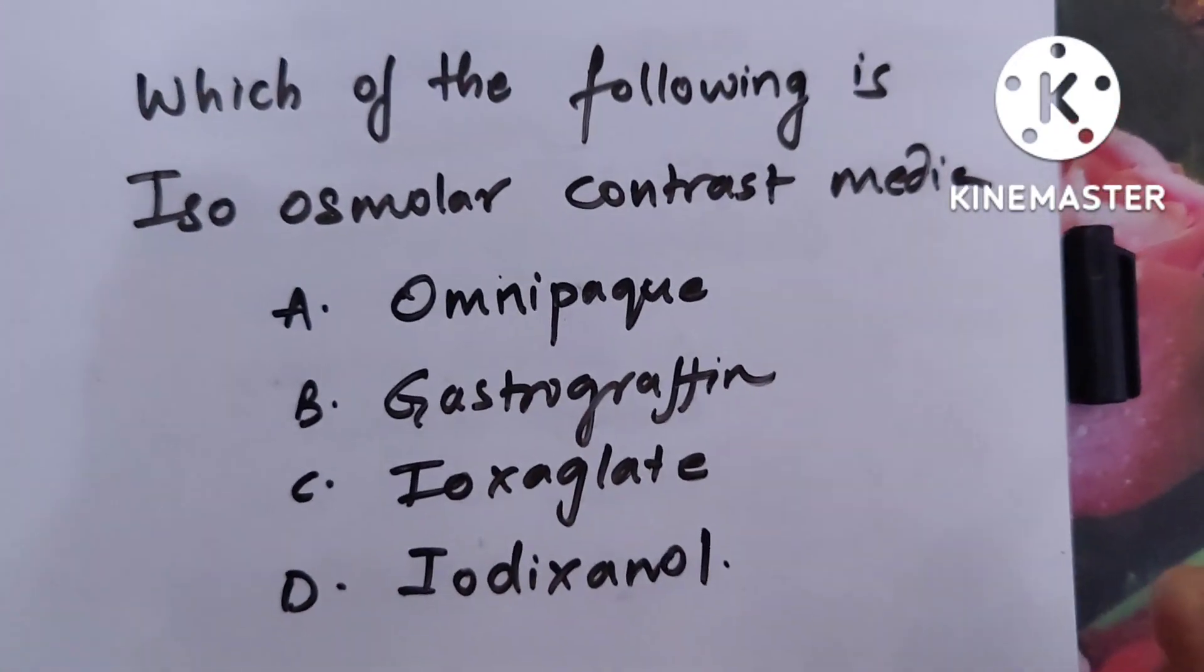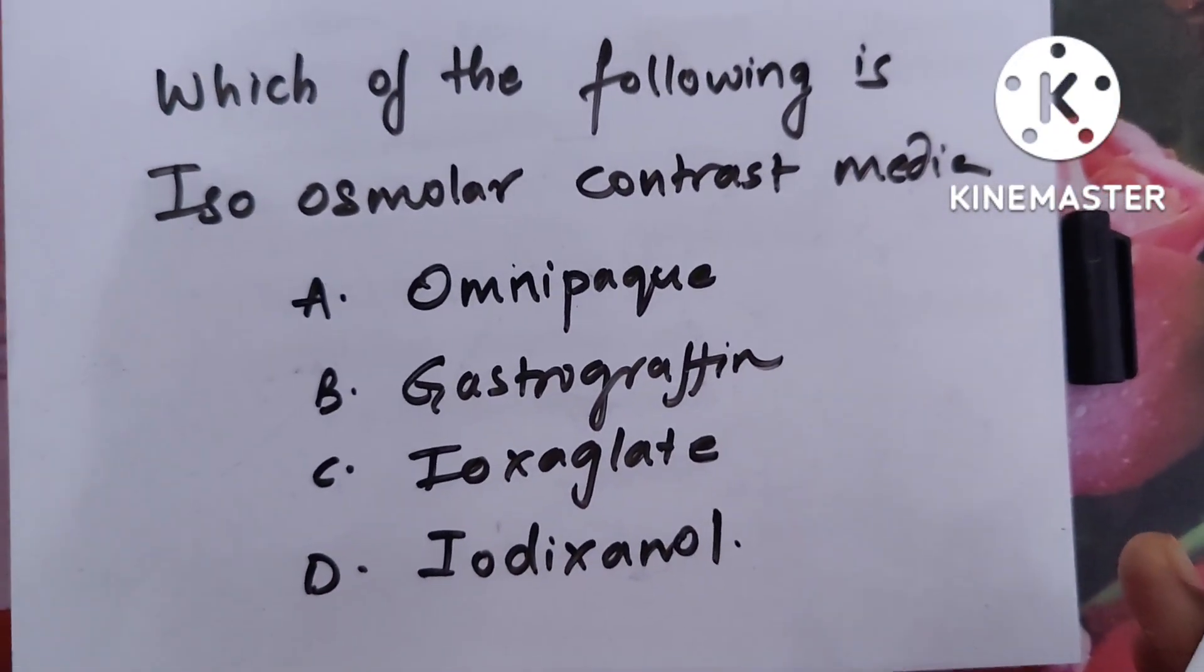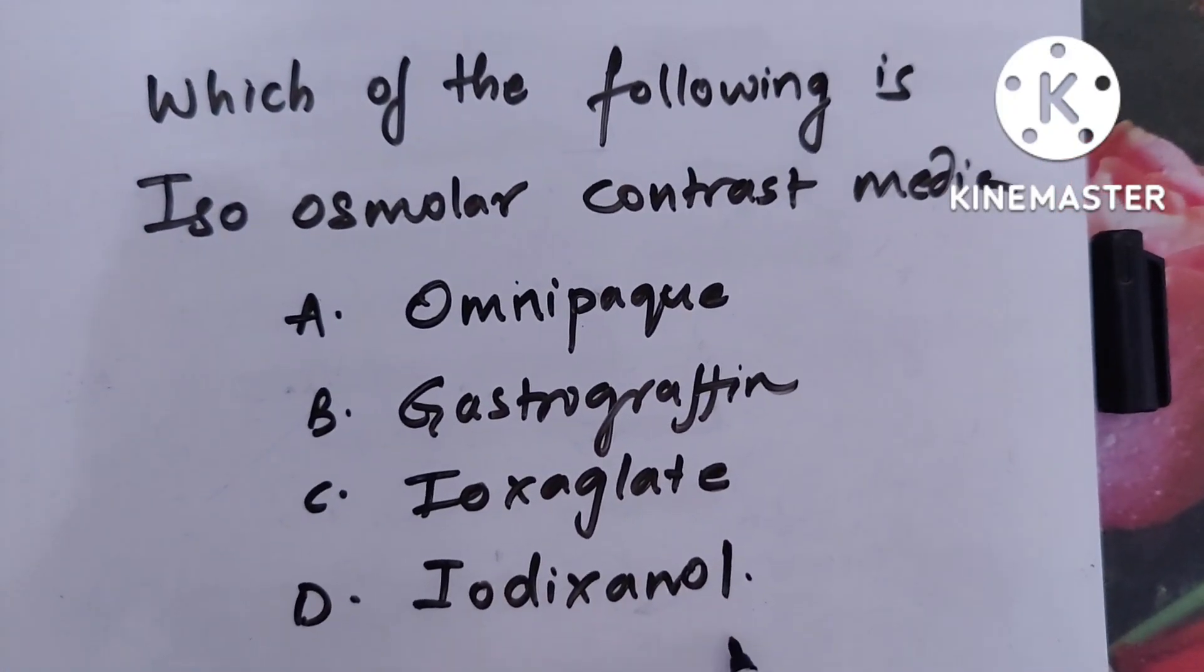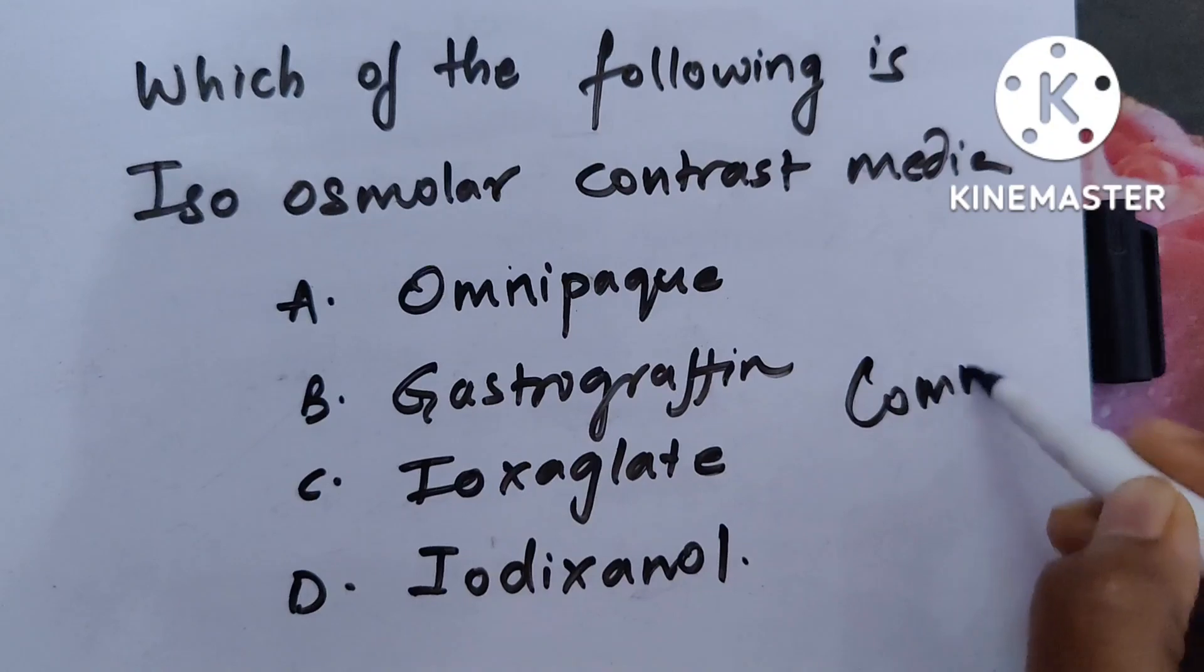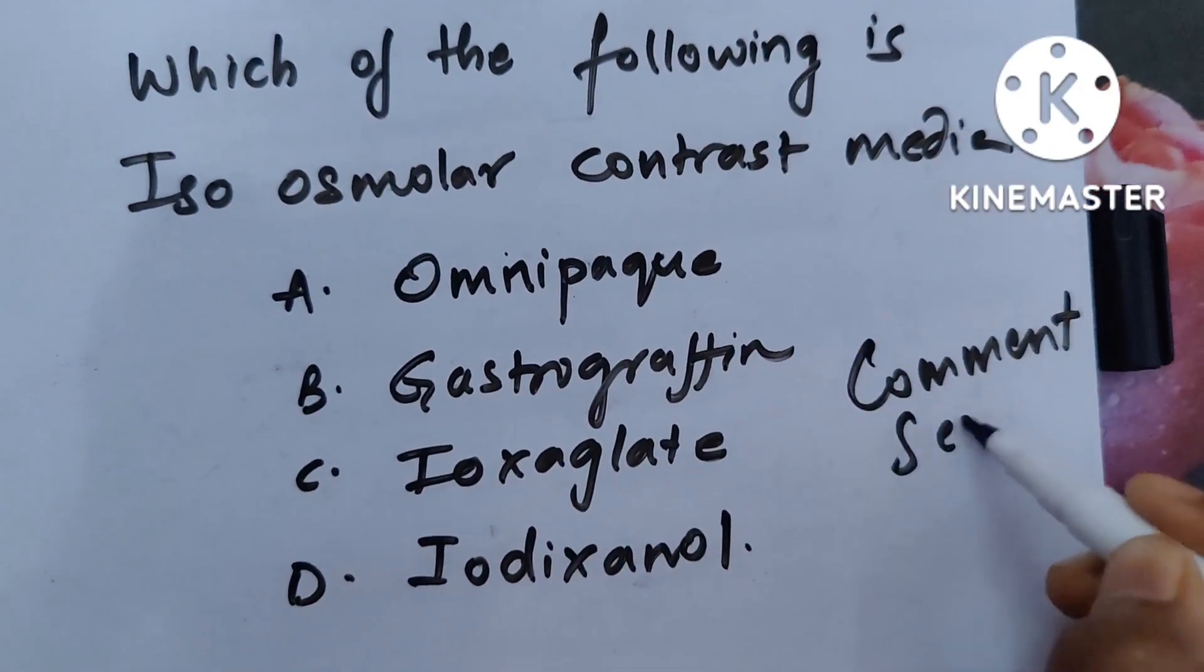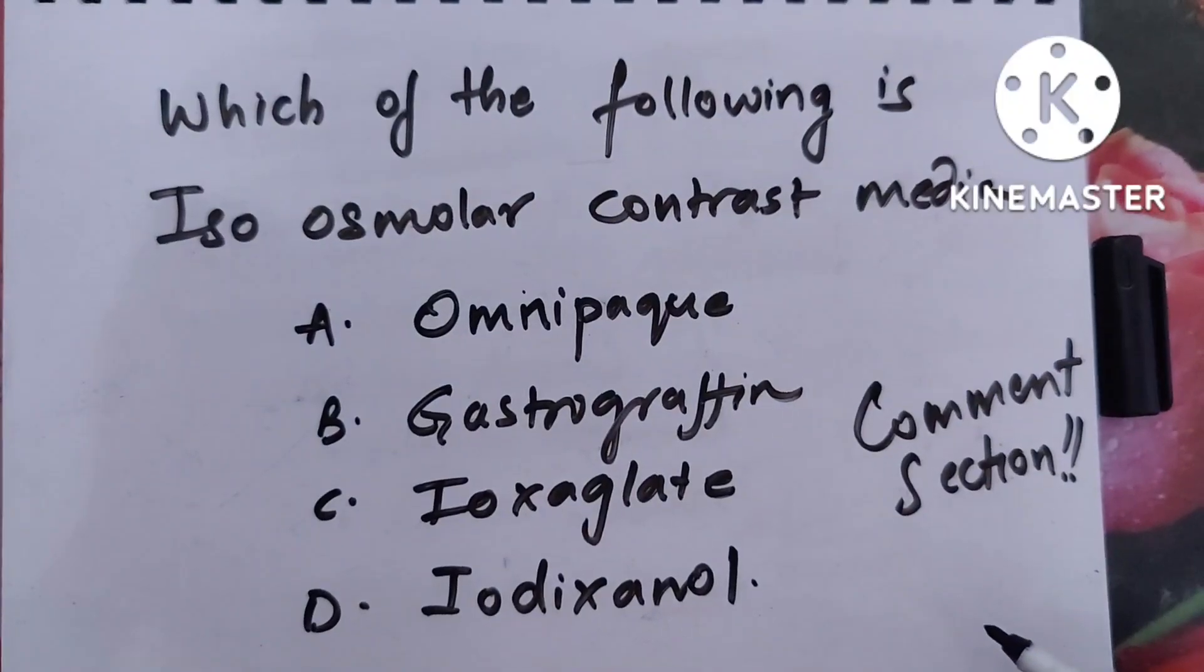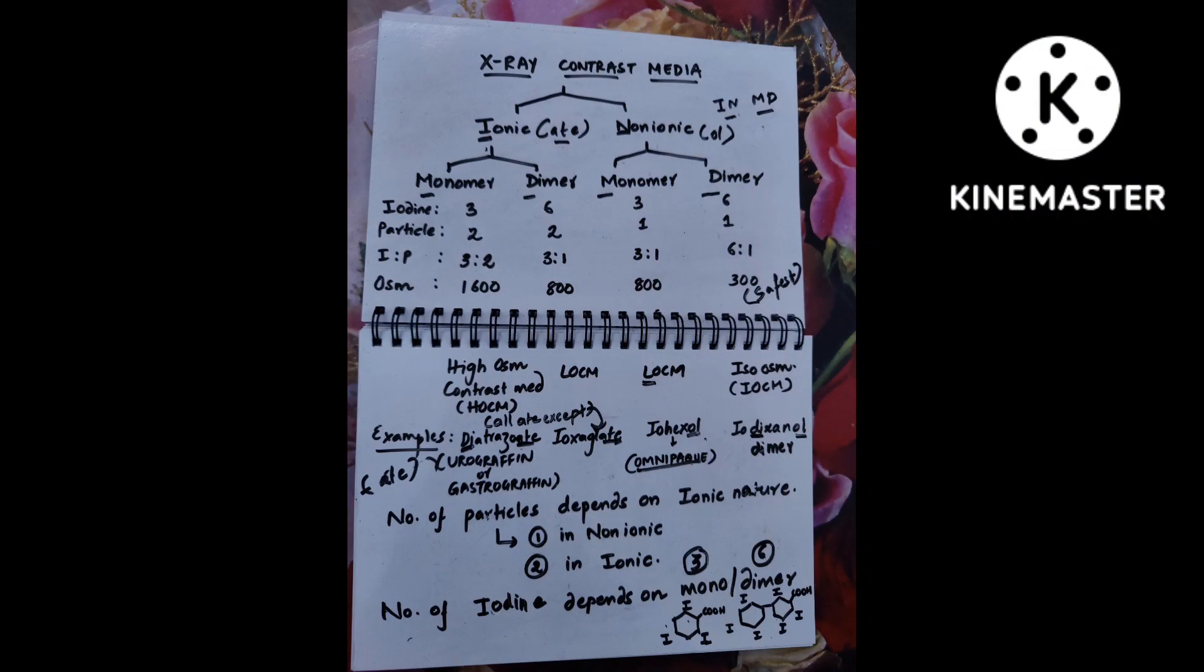Now solve this question for me: which of the following is iso-osmolar contrast media - omnipack, gastrografin, ioxaglate, or iodixanol? Answer in the comment section below. If you have any topic of difficulty, you can always ask me in the comment section or the telegram groups. Links are provided in the description. Please support by subscribing to the channel.